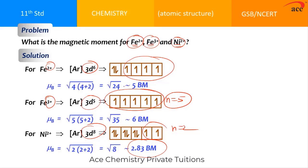Using this formula, we can calculate the approximate value of magnetic moment and also decide whether a substance is paramagnetic or diamagnetic in nature. I hope you understood the class. Thank you so much.